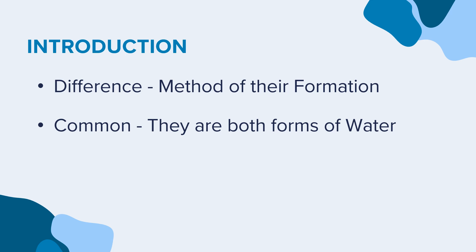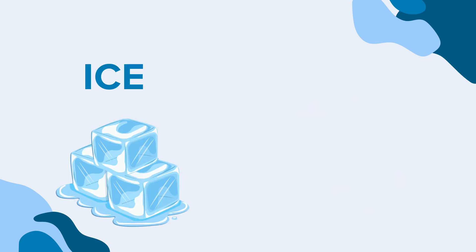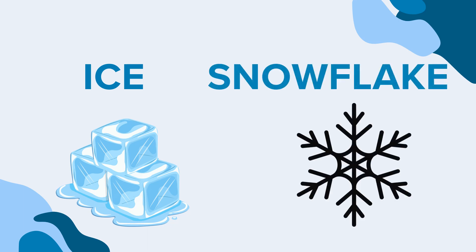Ice and snow both need a cold atmosphere to be created. Ice can be presented in many forms such as ice cube, frost, etc., whereas snow can only present in one form as snowflakes. Let's explore what more we can find about ice and snow, which will help us understand the difference between ice and snow better.